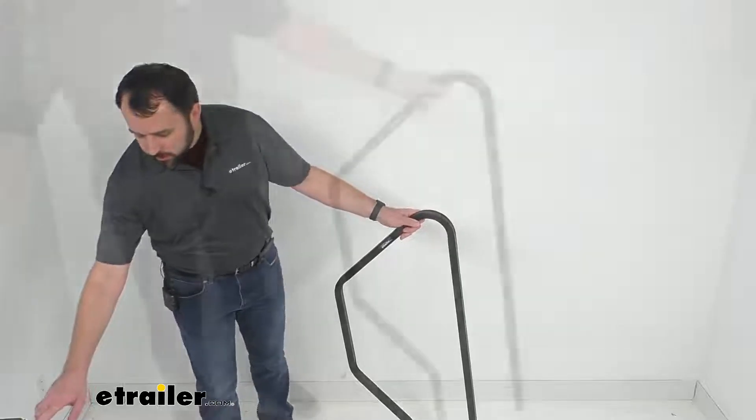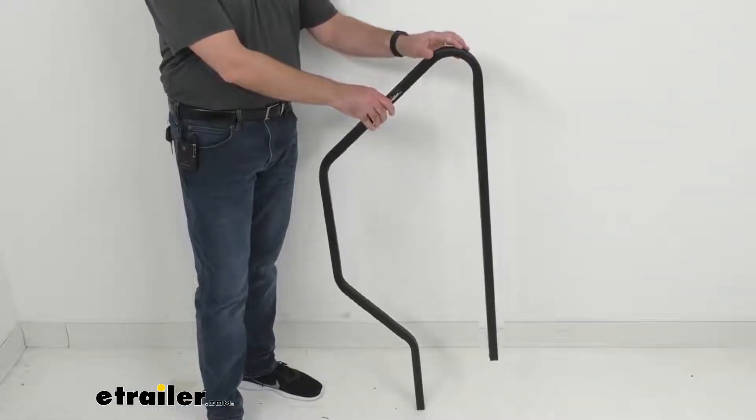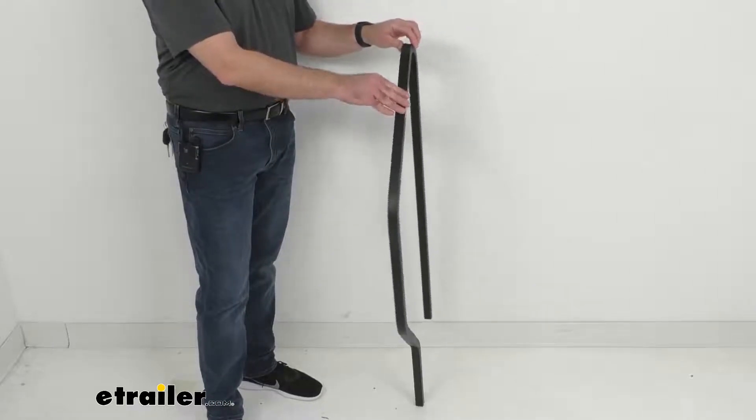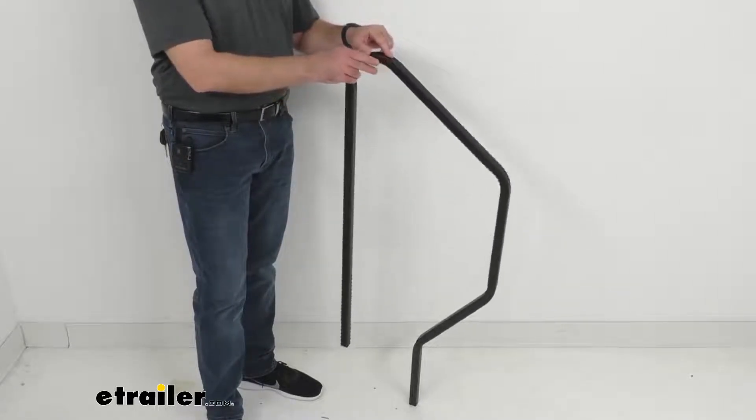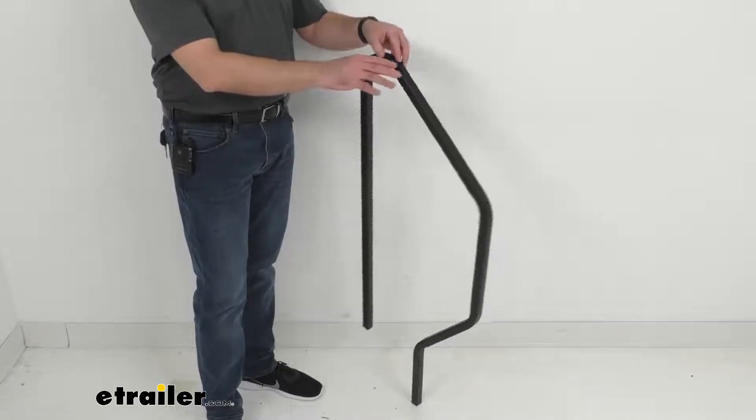Now this handrail is going to install on your second generation four-step MoRide RV steps. It's going to give you extra stability so you can safely climb in and out of your travel trailer or your fifth wheel.